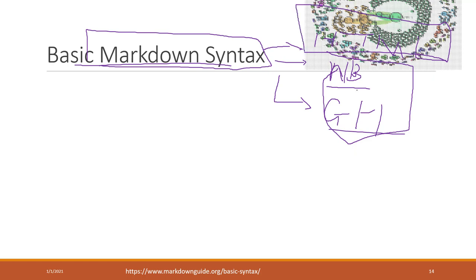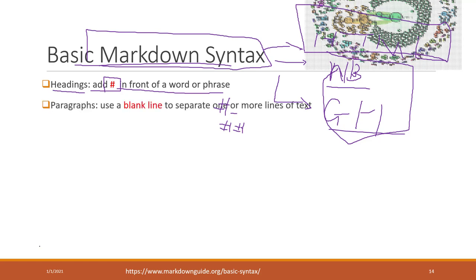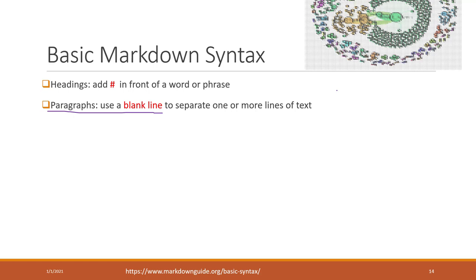In Markdown syntax, we can use the hashtag in front of a word or phrase to indicate the heading level. One hashtag indicates level one, two hashtags indicate level two. We can also use a blank line to indicate a new paragraph. For example, if you write a line and hit enter, going to a second line indicates a different paragraph.